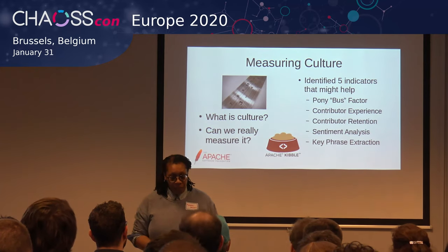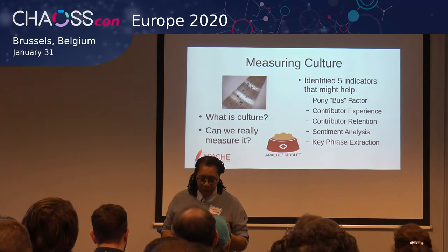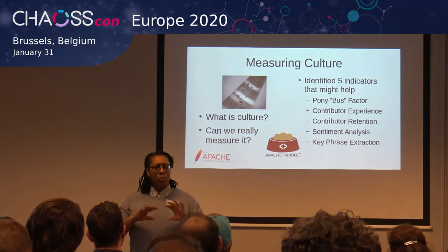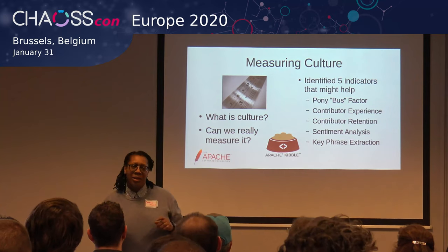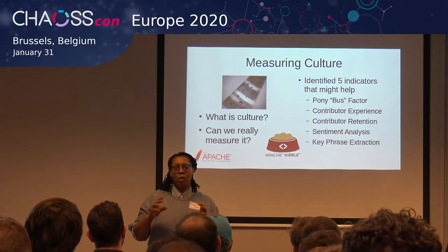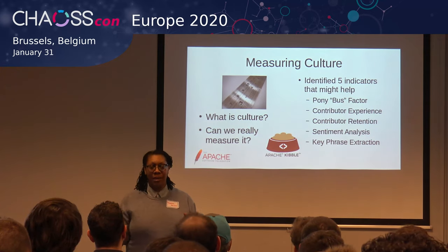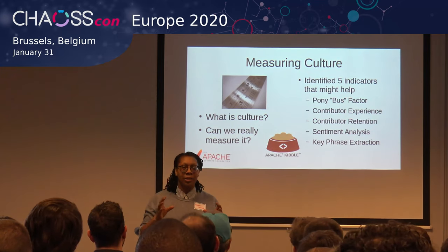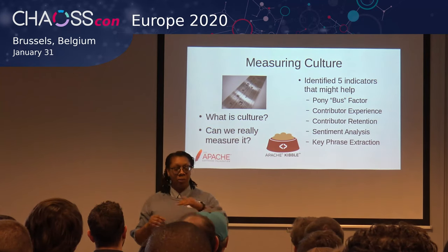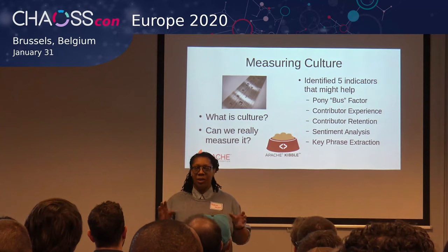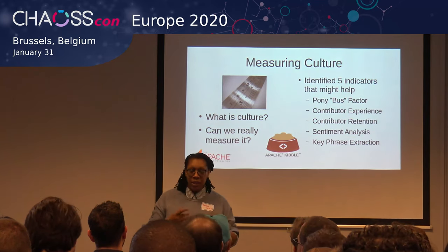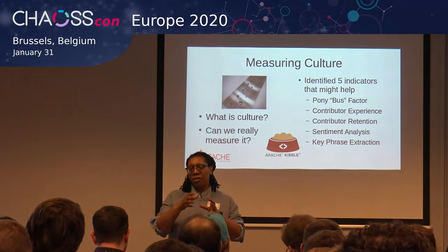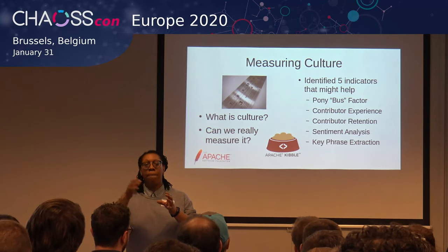So I chose five indicators from Apache Kibble. One of them was the pony factor — you might know it as the bus factor. This is roughly the minimum number of people you'd need to remove to effectively kill a project. The calculation is: how many people make up, say, 50% of your code base? Those are the people putting in the big contributions — and that's the number we use.